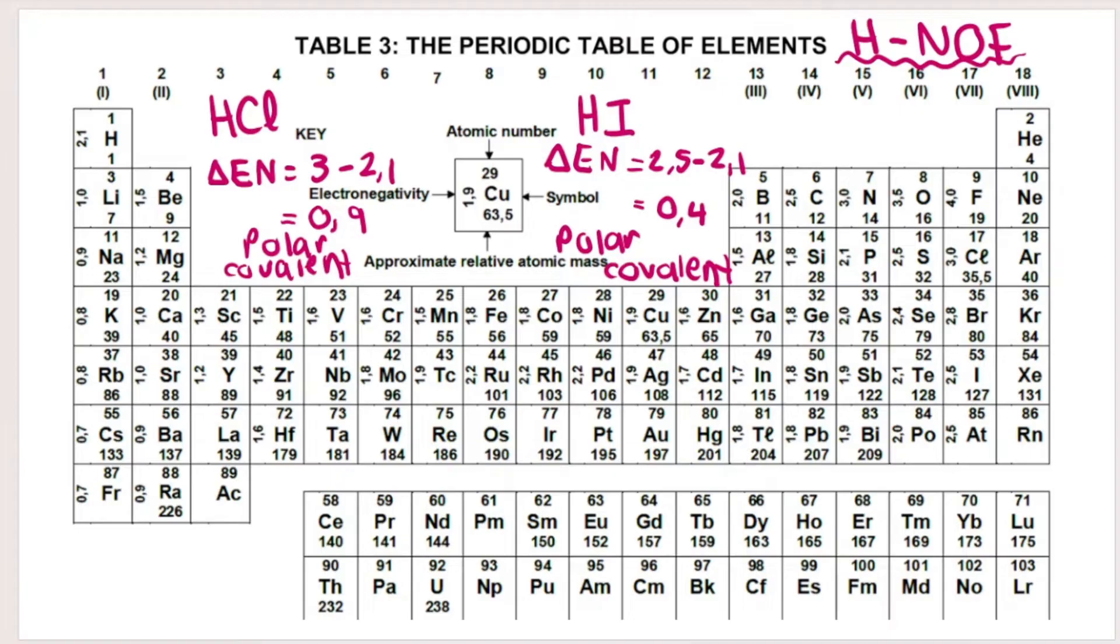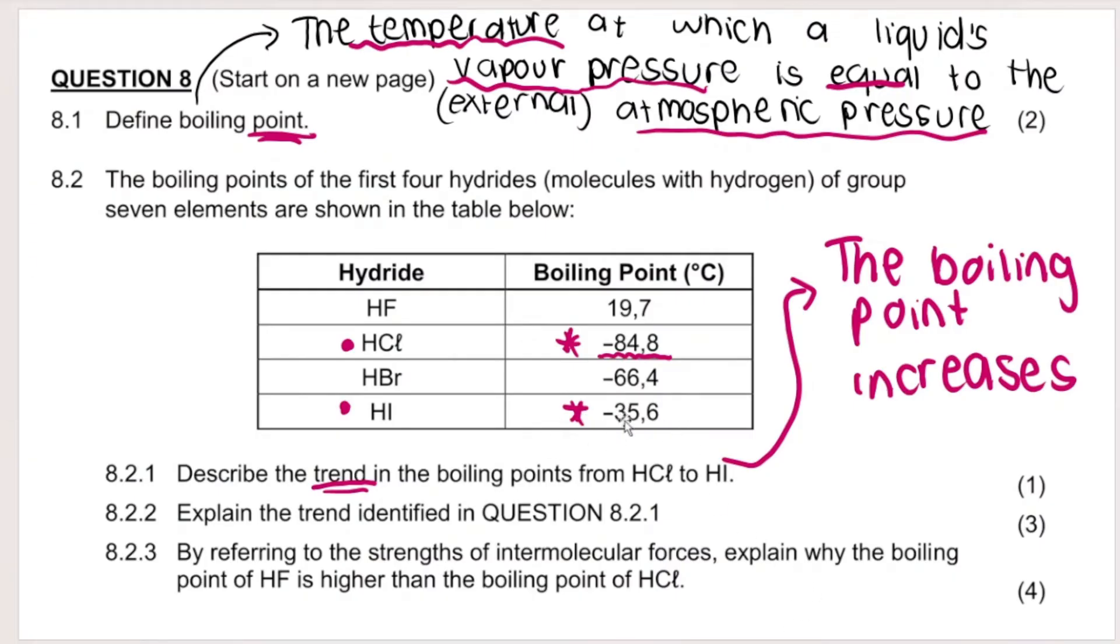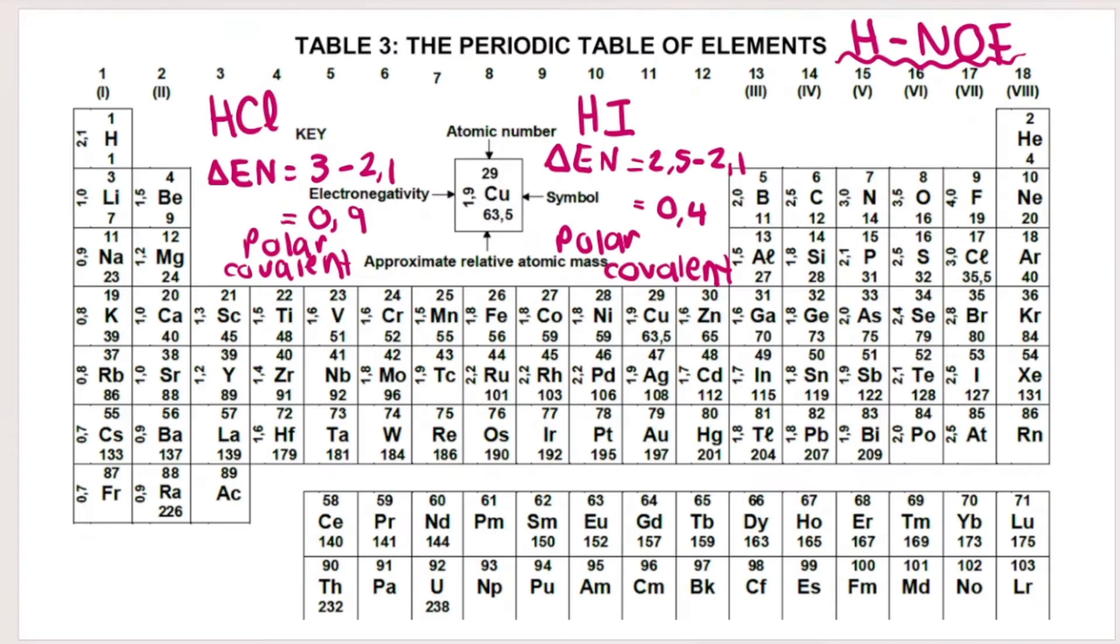But then, why does hydrogen iodide have a much higher boiling point than HCl? Well, if you look at our periodic table again, we can see that chlorine, the relative atomic mass number of chlorine, is 35.5. And if we look at iodine, it's much bigger, 127. So if I had to work out the molar mass or the molecular mass of HCl versus that of hydrogen iodide, I would see that hydrogen iodide has a much larger molecular mass. And the larger the molecular mass means that there will be more intermolecular forces between those particles.